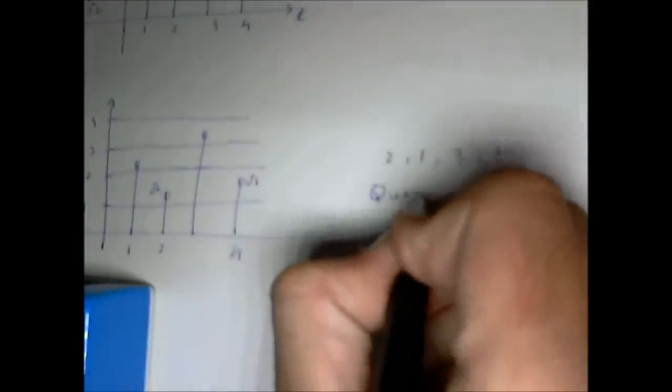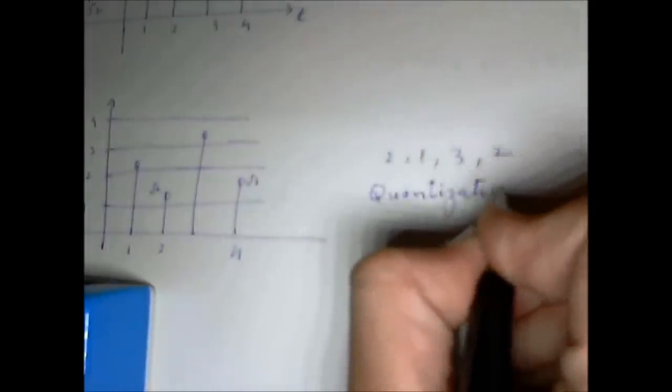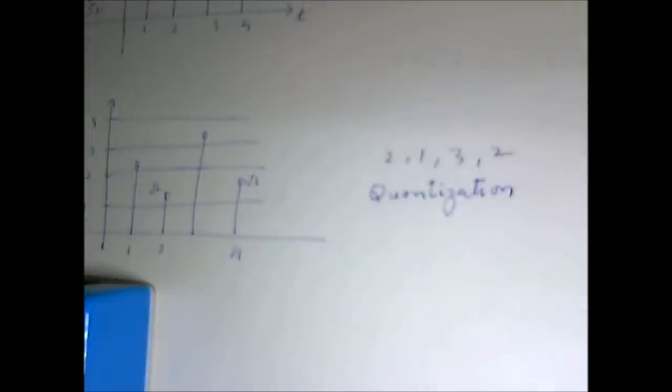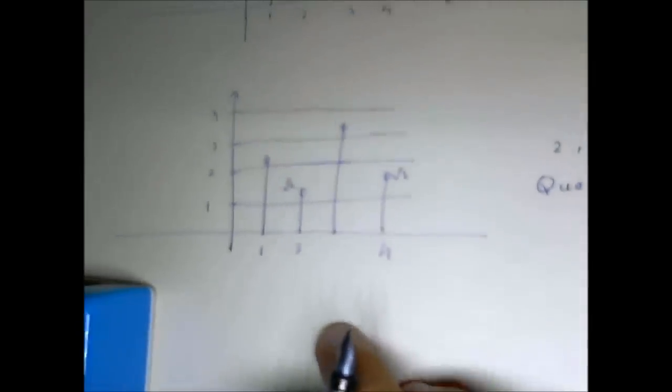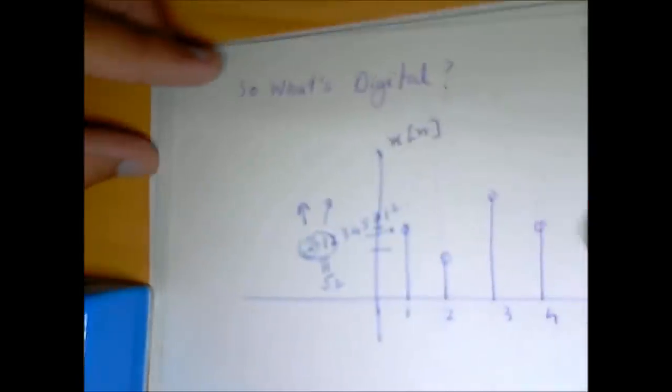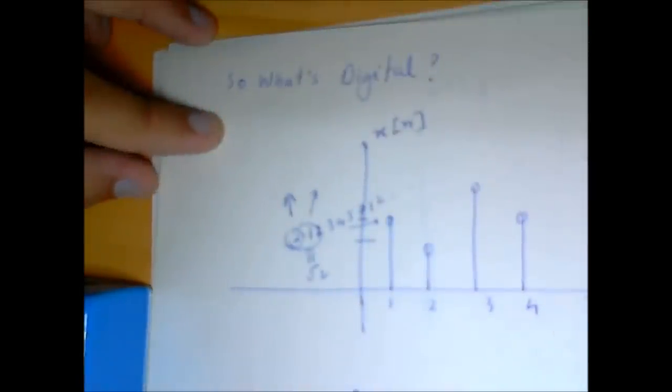So quantization. And what this means is we are actually discretizing the value of the dependent variable. We are discretizing the value of x. We cannot have any value of x we please. And this is the difference between digital and discrete time signals.